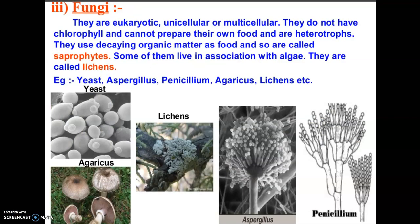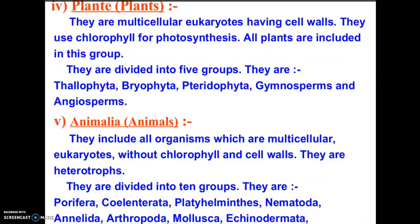Kingdom Fungi: they are eukaryotic, and may be unicellular or multicellular. They do not have chlorophyll, which is why they cannot make their own food — and that is why they are called heterotrophs. Examples include yeast, Aspergillus, Penicillium, Agaricus, and lichens.